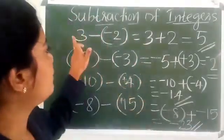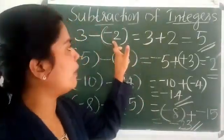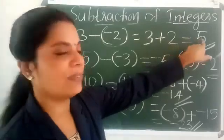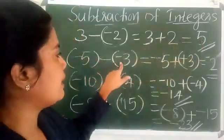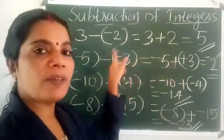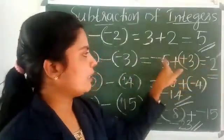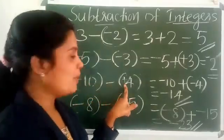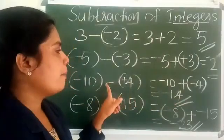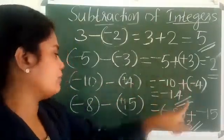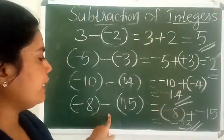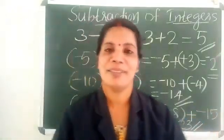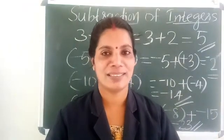How to subtract two integers? First: 3 minus minus 2 — add the additive inverse; 3 plus positive 2 gives 5. Next: minus 5 minus minus 3 — add the additive inverse of minus 3, which is positive 3; we get minus 2. Next: minus 10 minus positive 4 — additive inverse is minus 4; we get minus 14. Last: minus 8 minus 15 — additive inverse is minus 15; sum is minus 23. Hope all of you understood the concept. Thank you dear students.